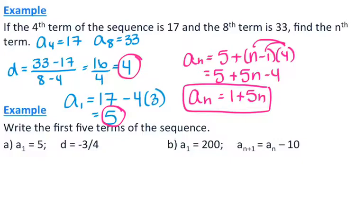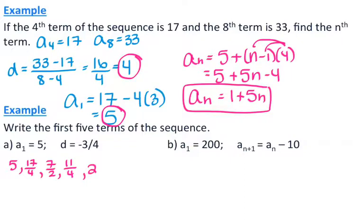The next example asks for the first 5 terms of a sequence. For letter A, the first term is 5 and the common difference is negative 3/4. The second term is 5 minus 3/4 equals 17/4. Continuing the pattern by subtracting 3/4 each time gives: 7/2, then 11/4, then 2. Those are the first 5 terms.